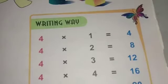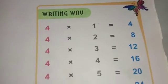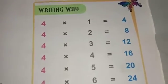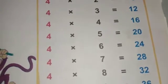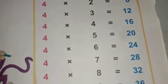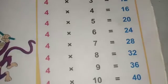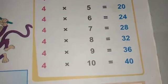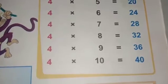4 1s are 4, 4 2s are 8, 4 3s are 12, 4 4s are 16, 4 5s are 20, 4 6s are 24, 4 7s are 28, 4 8s are 32, 4 9s are 36, 4 10s are 40.